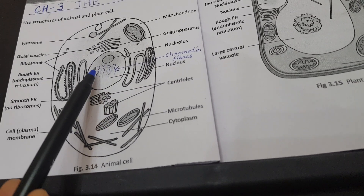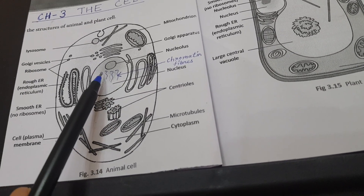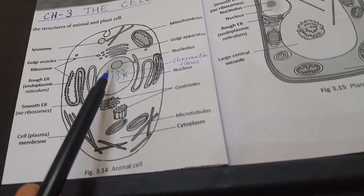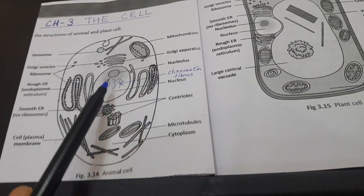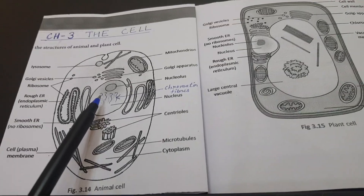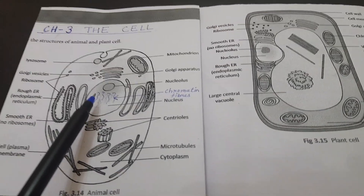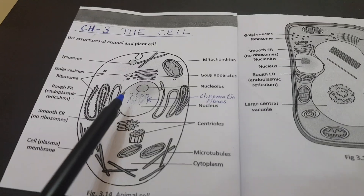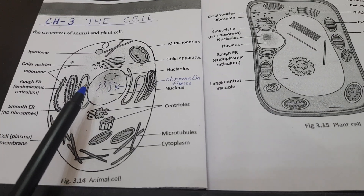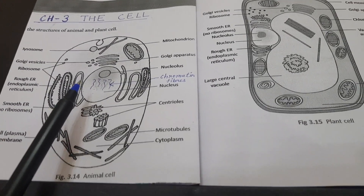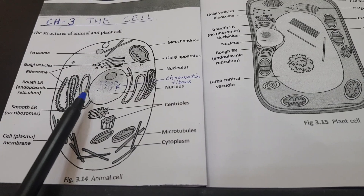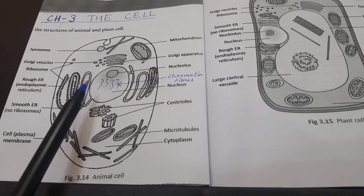There is also a thin thread-like structure called the chromatin fibers. During cell division, these chromatin fibers become thick and are called chromosomes. These chromosomes carry genes, and the function of chromosomes is to transfer the characteristics from the parent to the children through the genes.